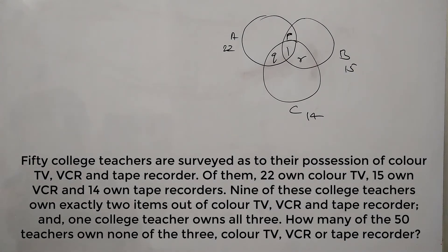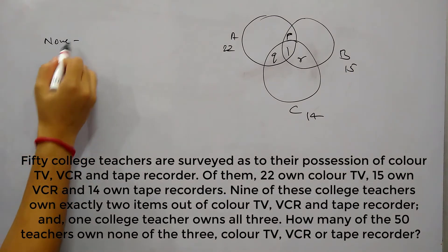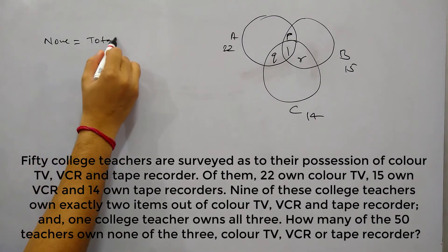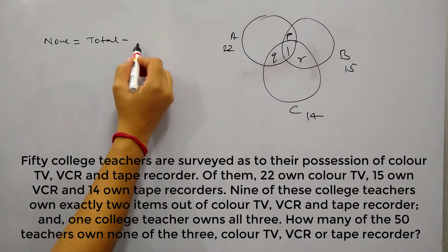So in question it is being asked that how many of the 50 teachers own none of the 3 color TV, VCR or tape recorder. So this is very clear, if we want to find out the value of none, that means teachers who do not own anything, then that can be simply obtained from total number of teachers minus those who own at least 1 item.